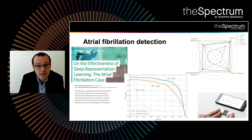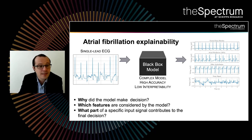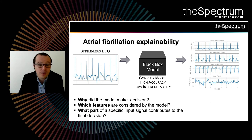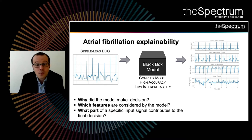The input is a single-lead ECG signal. The signal enters the black box and the machine learning algorithm outputs one of four labels: normal sinus rhythm, atrial fibrillation, other arrhythmias, or just noise if the signal is corrupted. This model comes with high accuracy, but it's really difficult to interpret why it is making a particular decision, or which part of the signal is triggering the decision of the machine learning model.